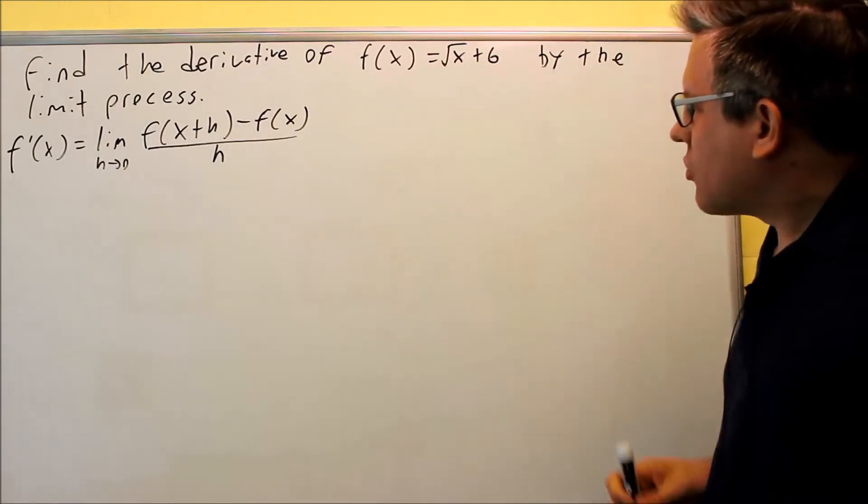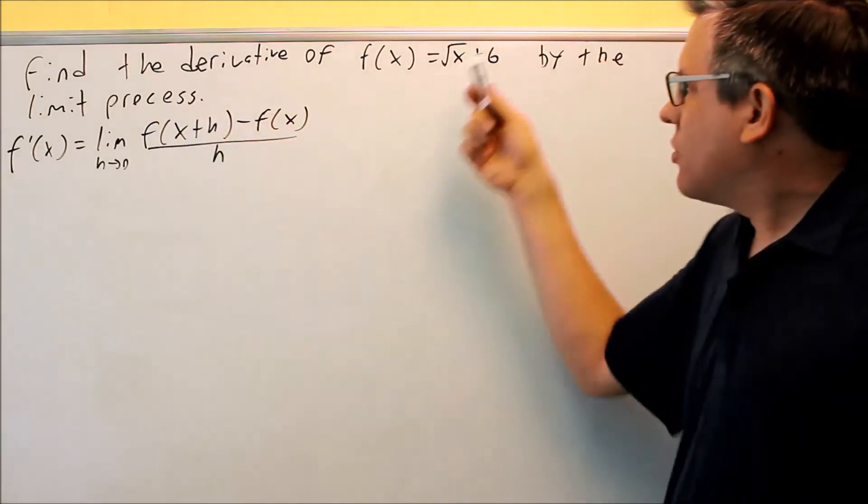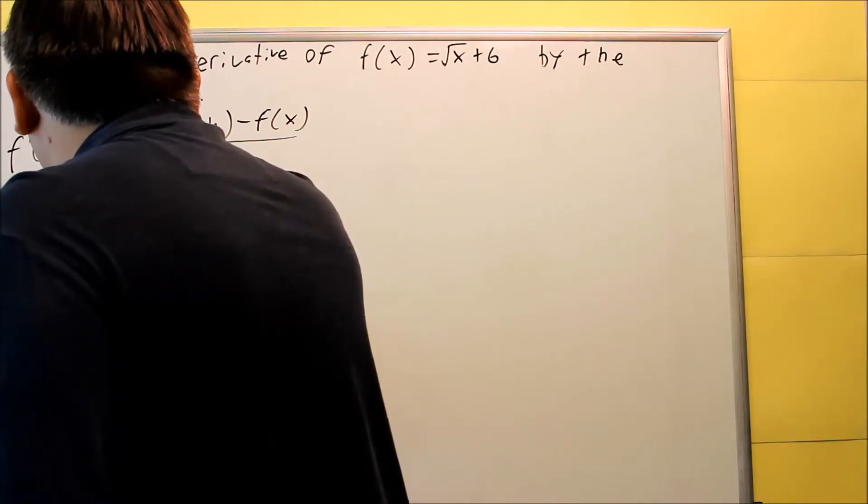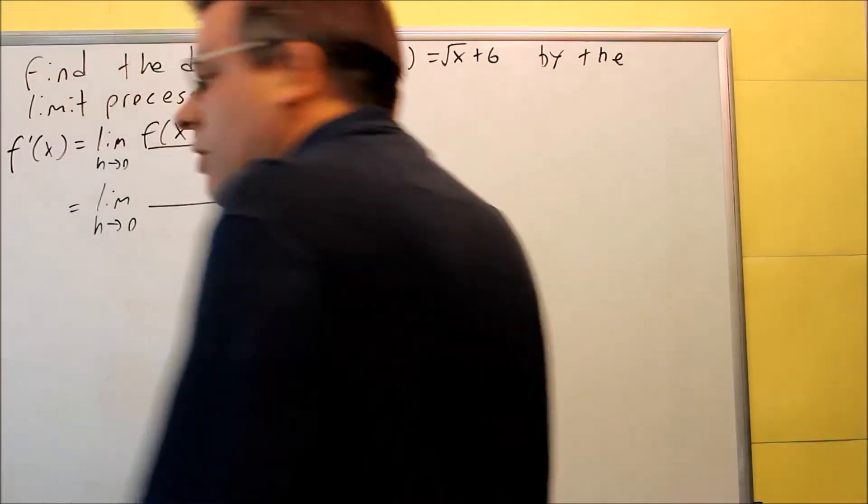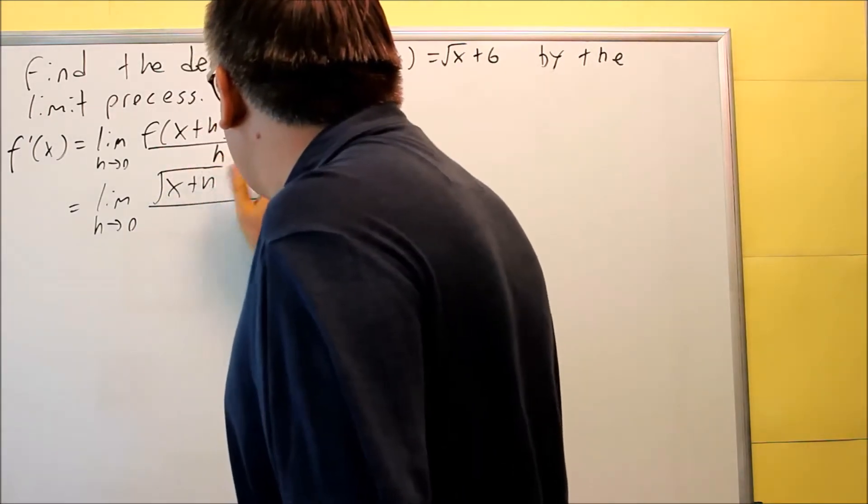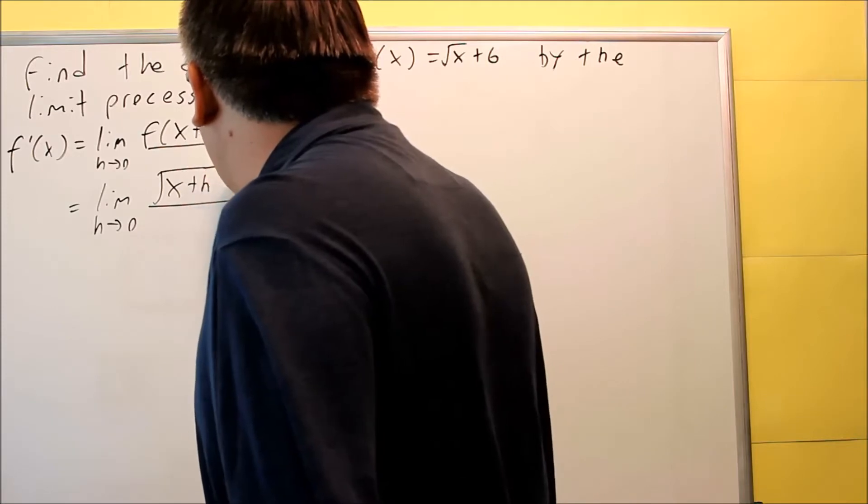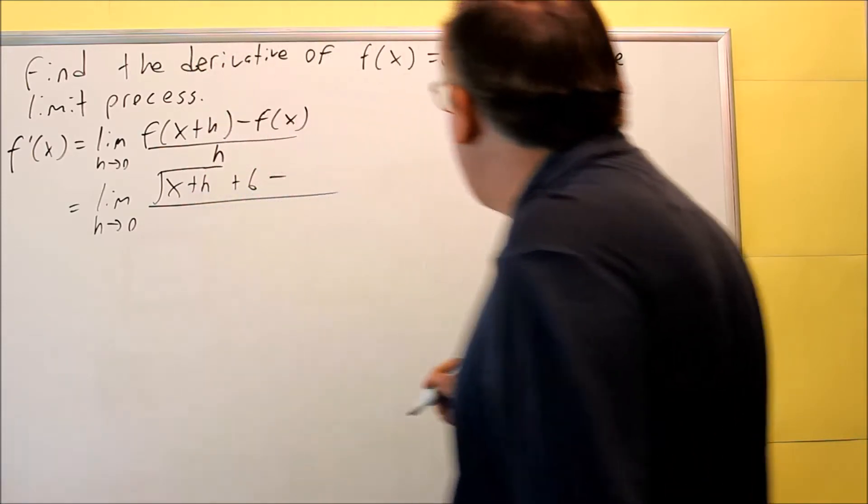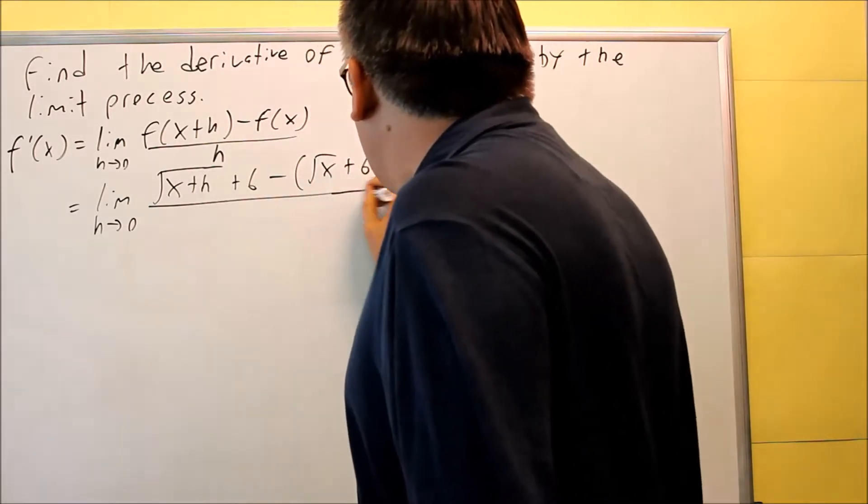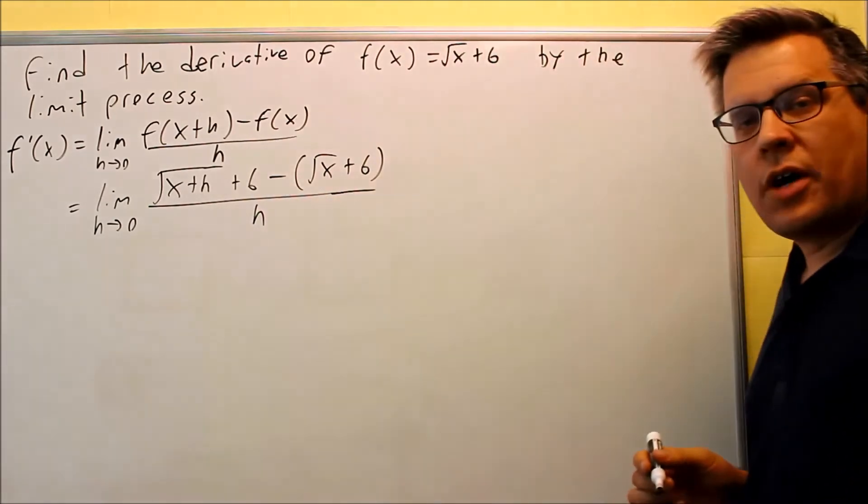Alright, so I have square root of x plus 6. I need to put in x plus h in for x there. So when I do that, it's going to look like this: square root of x plus h, and then plus 6. And minus f of x. f of x is our original function that we have there. Then the h goes on the bottom.